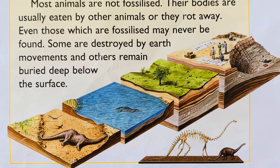Scientists carefully dig out the bones and then reassemble them into complete skeletons. Most animals are not fossilized — their bodies are usually eaten by other animals or they rot away. Even those which are fossilized may never be found. Some are destroyed by earth movements and others remain buried deep below the surface.